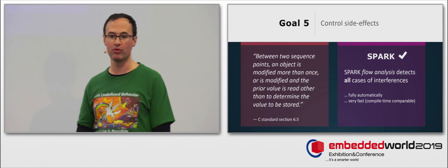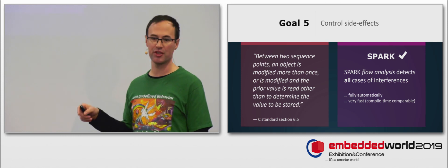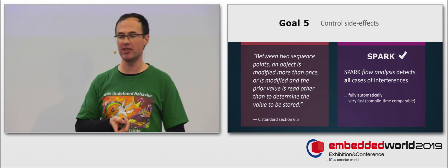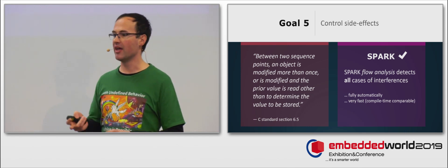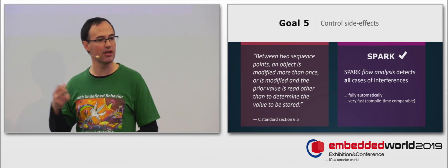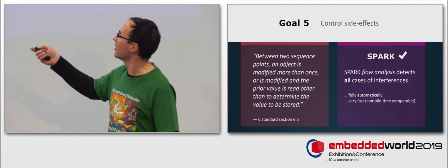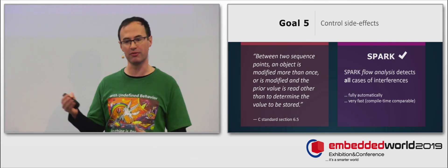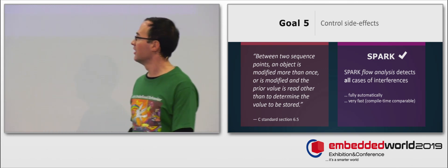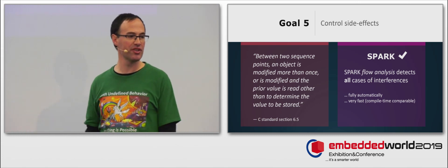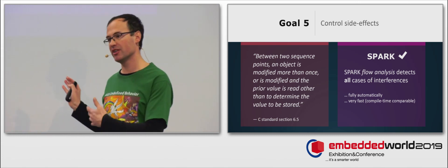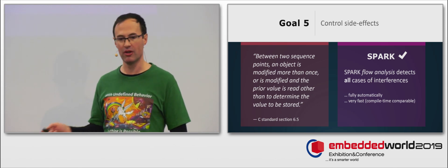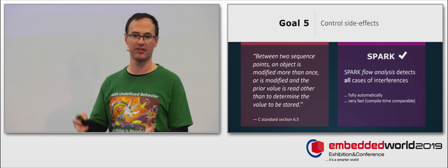MISRA C also has a number of rules to prevent unintended side effects inside expressions. That's with two objectives in mind: decreasing the possibility for developer confusion, and the second is to avoid some undefined behaviors that are related to conflicting side effects, which are underpinned by this section of the C standard, explaining what happens in case of conflicting side effects between sequence points. I know of no MISRA C checker that enforces this rule. In Spark, the Spark analysis tool can detect all occurrences of unintended side effects. Again, this is because the Spark language subset was designed for this goal.